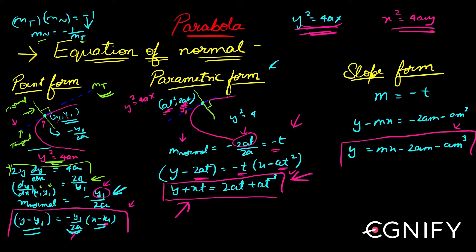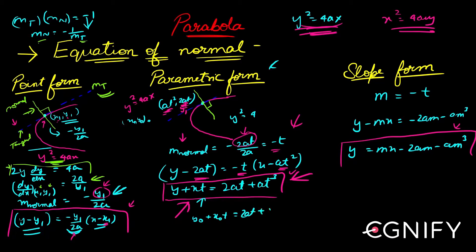Now, if we make this normal pass through an external point (x₀, y₀), we get: y₀ + x₀·t = 2at + at³. This is a cubic in t, which means at most three normals can be drawn from a point to the parabola.